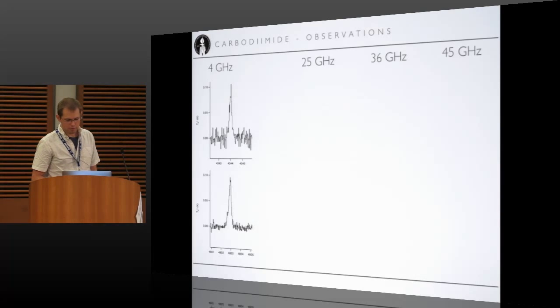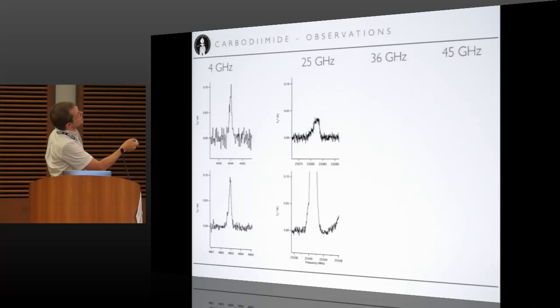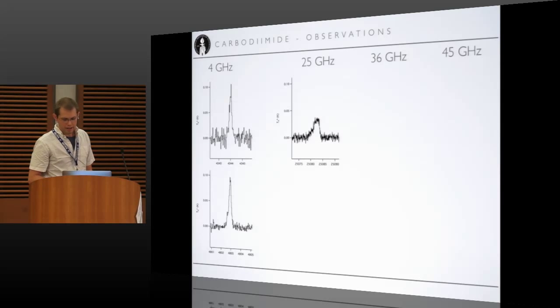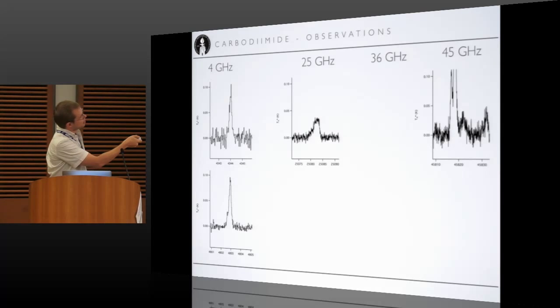16 gigahertz, we don't have coverage for. 25 gigahertz, we have a line here. This is another interfering transition of methanol, so that's hiding our line there. And at 45 gigahertz, we have a line right there, and this one we don't have coverage for.